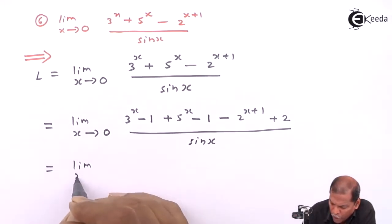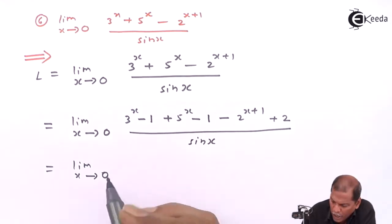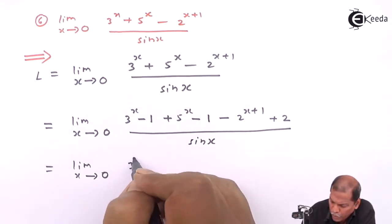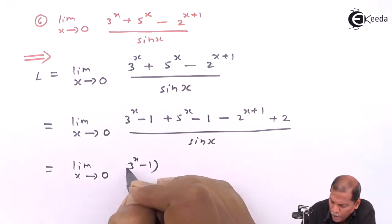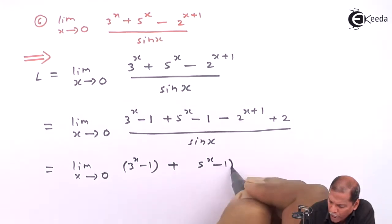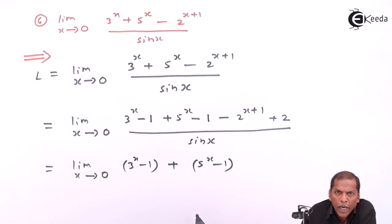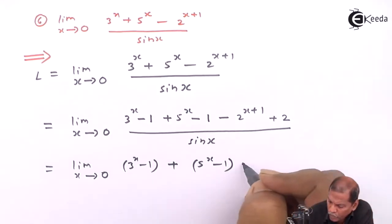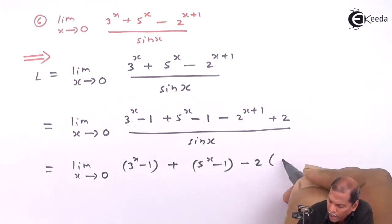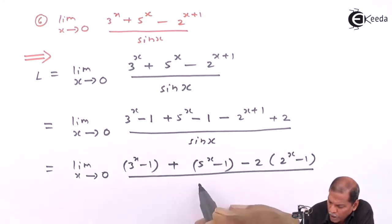Now in the numerator we have to make proper brackets. Limit x tends to 0, we have 3 raise x minus 1 as one bracket, plus 5 raise x minus 1 as a second bracket, and then from the remaining last two terms we take minus 2 common. So in bracket we have 2 raise x minus 1, and then totally divided by sin x.